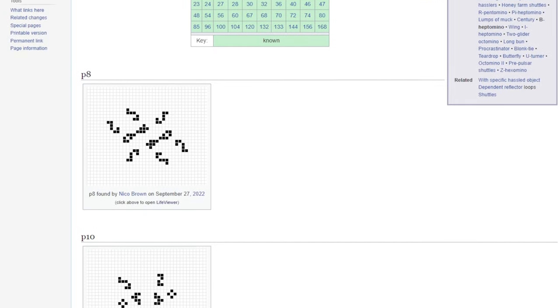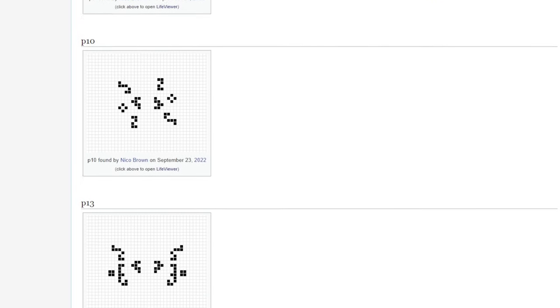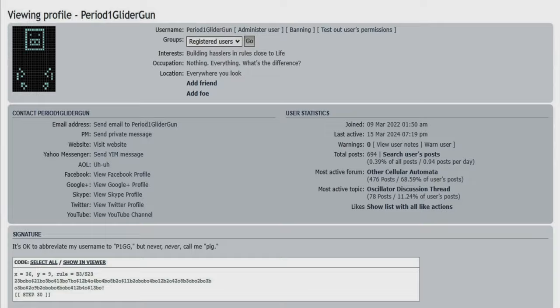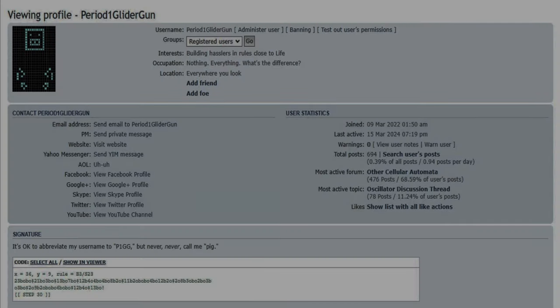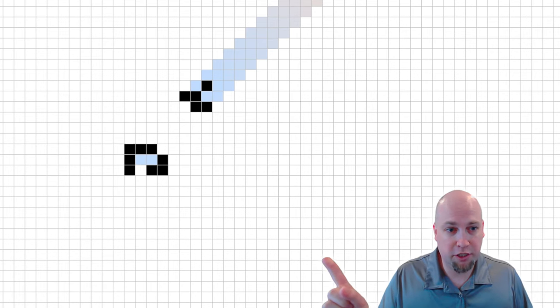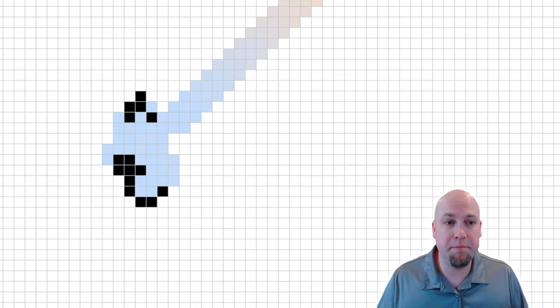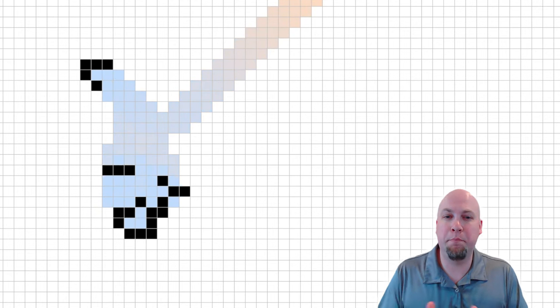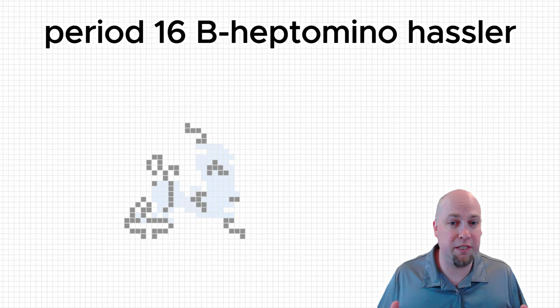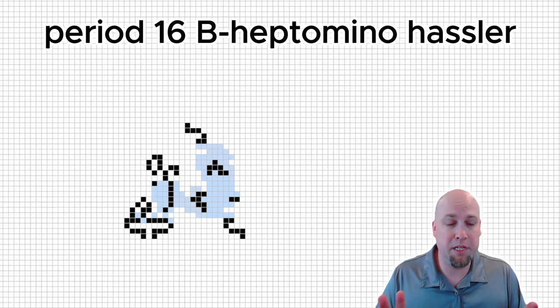So, there are lots of oscillators and other guns out there already known that make use of the B-heptomino. So the first step in creating these new period 15 and 16 glider guns was when P1GG, period 1 glider gun, the user who found these guns, they noticed that you can bounce a glider off of a B-heptomino in this reaction here.